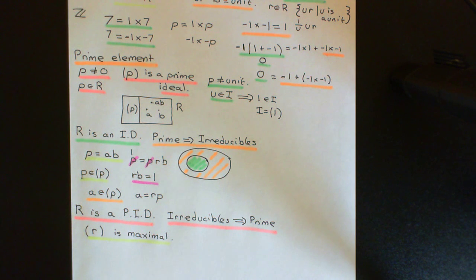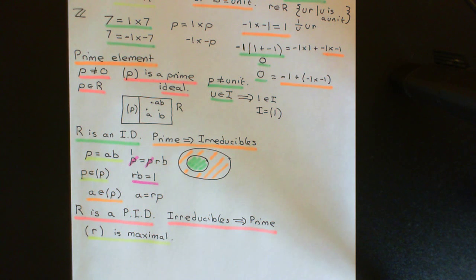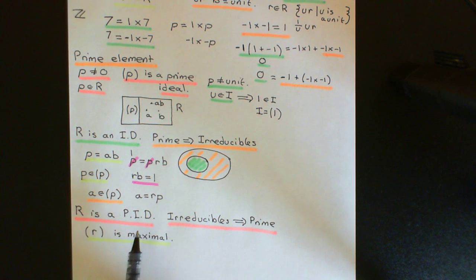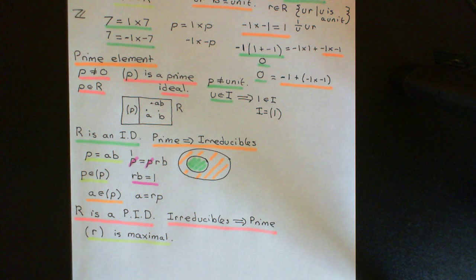Briefly, you can prove that maximal ideals are prime because when you quotient a commutative ring out by a maximal ideal you get a field, and a field is always an integral domain. Whenever you quotient a commutative ring out by an ideal and get an integral domain, that implies the ideal is a prime ideal. So because quotienting by a maximal ideal gives a field — which is certainly an integral domain — we can conclude that maximal ideal must have been a prime ideal. So if we can show that the principal ideal generated by an irreducible element in the PID is a maximal ideal, then it's instantly a prime ideal, and therefore this element is going to be a prime element.